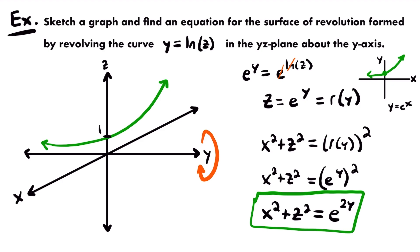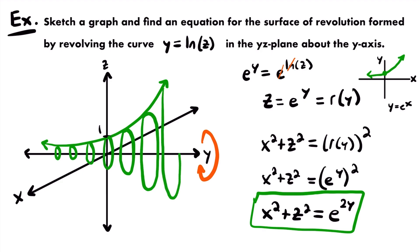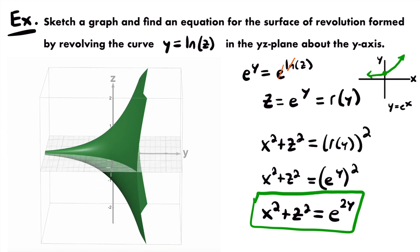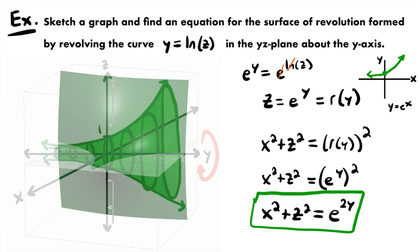Revolving this exponential curve around the y-axis forms our surface of revolution. Drawing circular cross sections around that axis — keeping the radius equal to the distance from the axis to the curve on both sides — gives us the shape. Connecting those circles and shading it in completes the surface. A 3D render is shown on screen. That is the surface of revolution formed by revolving y equals the natural log of z about the y-axis.